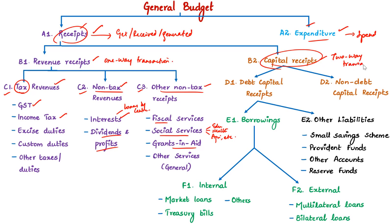Capital receipts are essentially two-way transactions — they either create a liability or cause a reduction in the assets of the government, and are non-recurring and non-routine in nature. They include receipts from disposal of permanent assets, recovery of loans given to others, or fresh loans raised by the government. Capital receipts are further classified into debt capital receipts and non-debt capital receipts. Debt capital receipts create a debt obligation on the government — that is, borrowings or fresh loans raised by the government and other liabilities. Borrowing is further classified into internal and external borrowing.